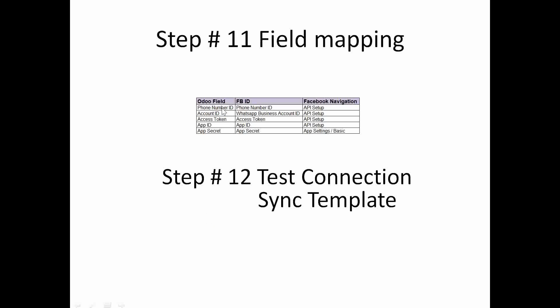Here is the field mapping required: Phone Number ID maps to the Phone Number ID available on the API setup. Account ID equals the WhatsApp Business Account ID. Access Token maps to Access Token. App ID maps to App ID. App Secret is available under App Settings > Basics on your Facebook Meta page account.